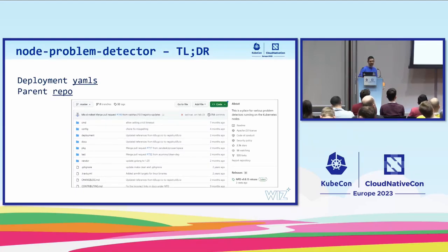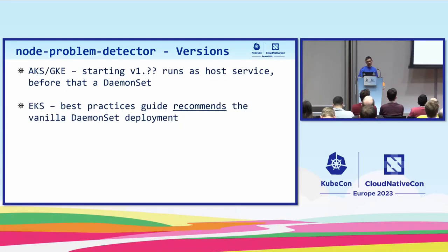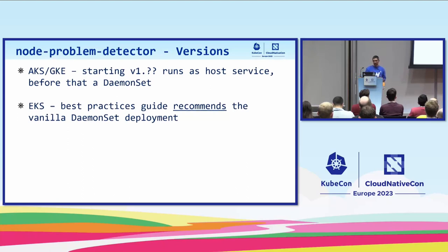In short, node problem detector is like a health checker on steroids — it runs a bunch of checks on the node and tells the API server if everything is good or bad. There is a parent repo, but AKS and GKE run their own modified version, and we don't have access to that source. The interesting part is that starting at some version, node problem detector runs as a host service, not as a daemon set. In AKS, according to the best practices guide, they still recommend installing the daemon set deployment, but on AKS and GKE it runs as a host service.